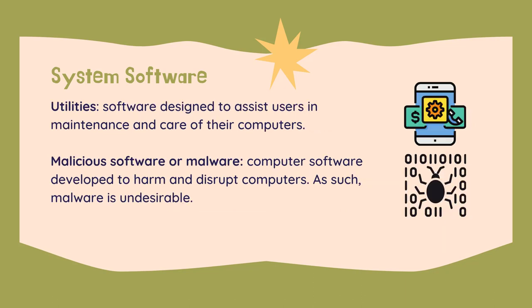Utilities are software designed to assist users in the maintenance and care of their computers. Malicious software, or malware, is computer software developed to harm and disrupt computers. Malware is undesirable and is closely associated with computer-related crimes, though some malicious programs may have been designed as practical jokes.